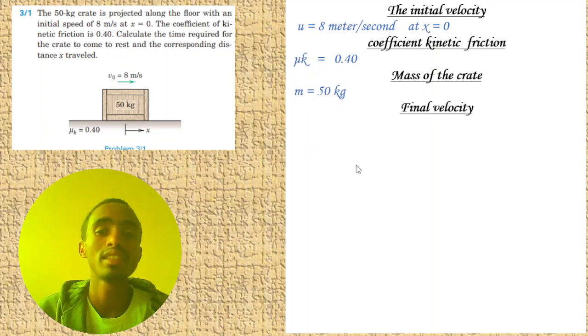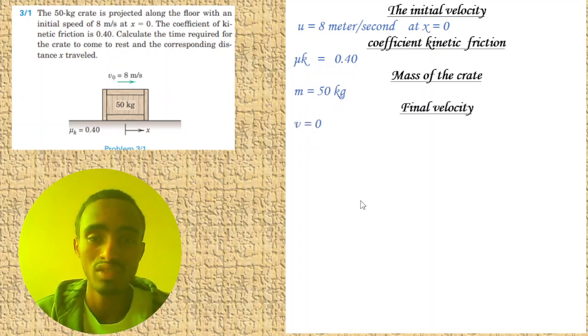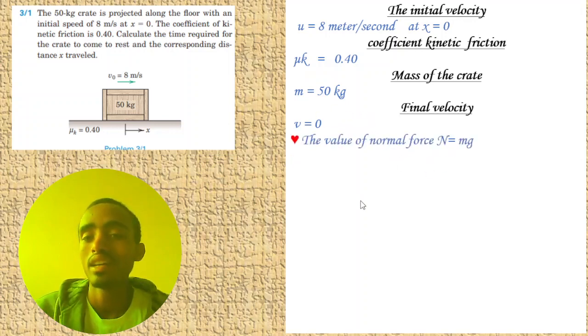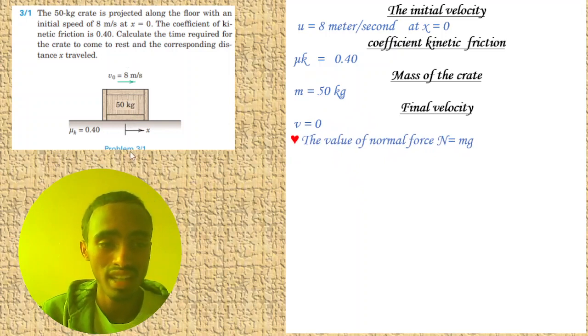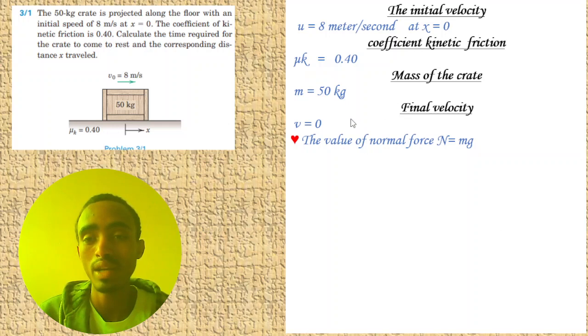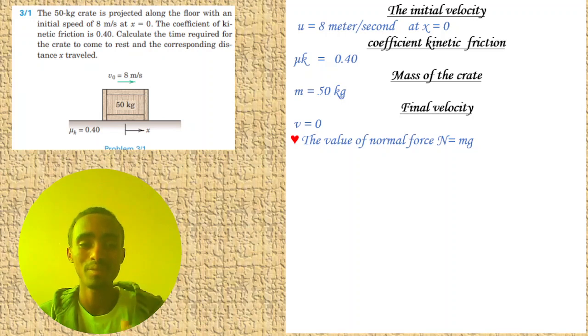We can calculate the normal force which is very important. It presses this block perpendicular to the surface and is cancelled by the weight of the block. Due to the balance between normal force and weight, there is no movement of the crate in the upward or downward direction since the summation of forces in the y direction is zero.